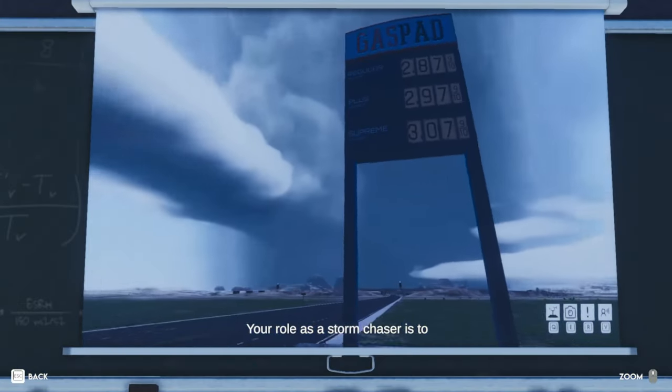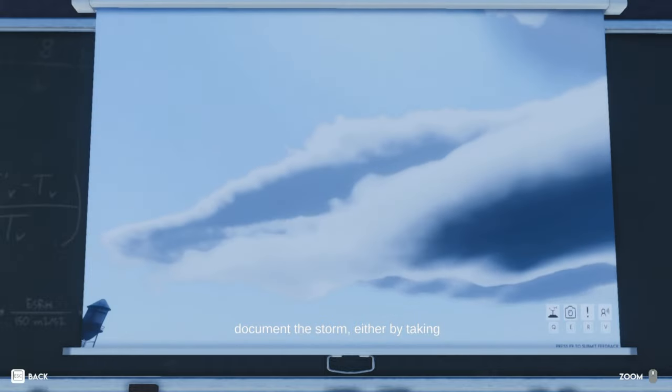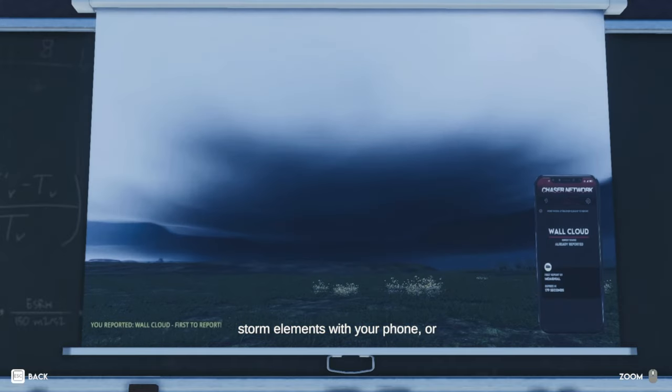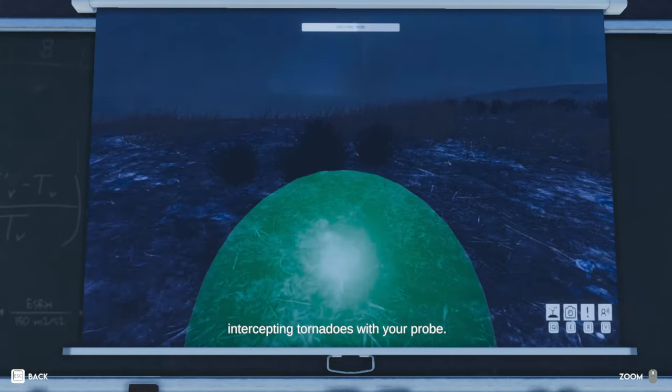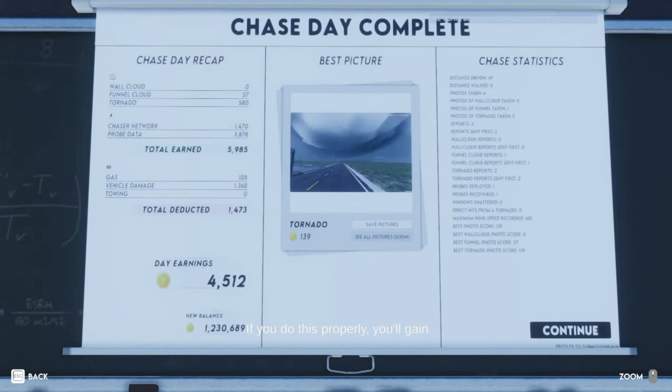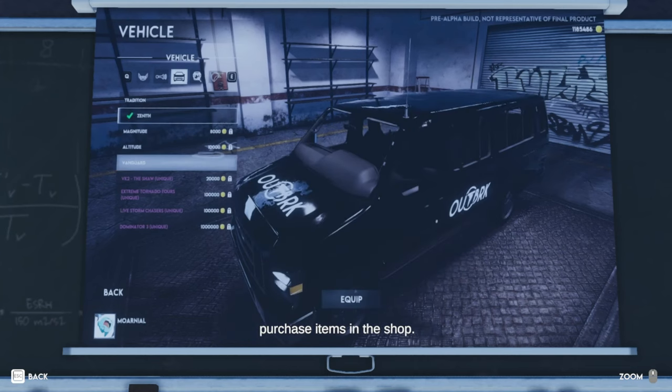Your role as a storm chaser is to document the storm, either by taking pictures with your camera, reporting storm elements with your phone, or intercepting tornadoes with your probe. If you do this properly, you'll gain currency at the end of the chase to purchase items in the shop.